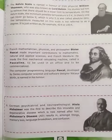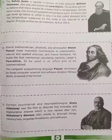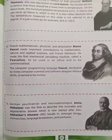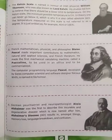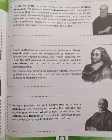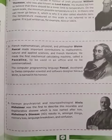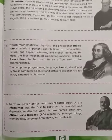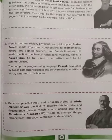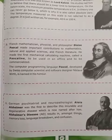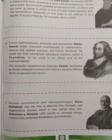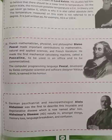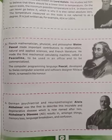Fifth, French mathematician, physicist and philosopher Blaise Pascal made important contributions to mathematics, natural and applied sciences, and French literature. He made the first mechanical calculating machine, called a Pascaline, to be used in an office and to be commercialized.